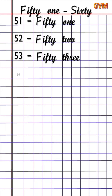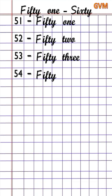This is number 54. Now write a dash and write 54 ka number name: F-I-F-T-Y, fifty, then some space, F-O-U-R, four — 54.